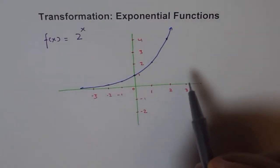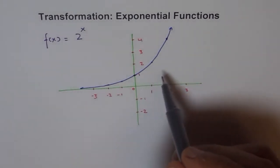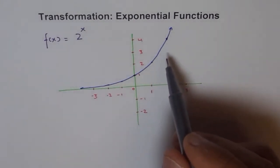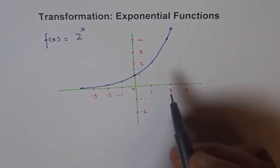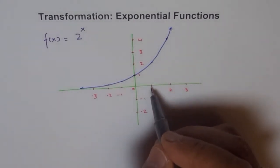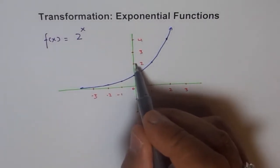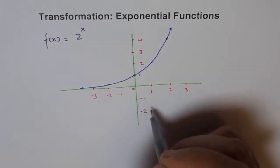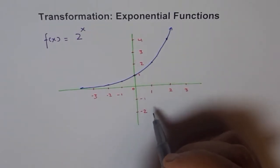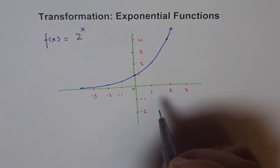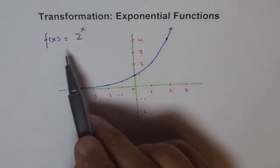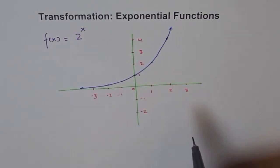Even if we know there is no stretch or compression on the graph, if you check the value at x = 1 it gives you the base, which is 2. That's a very easy way to check this. Now let us consider different transformations of this function.